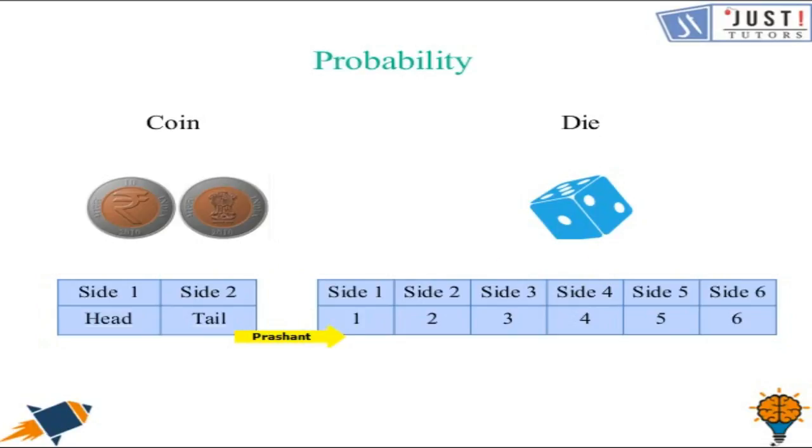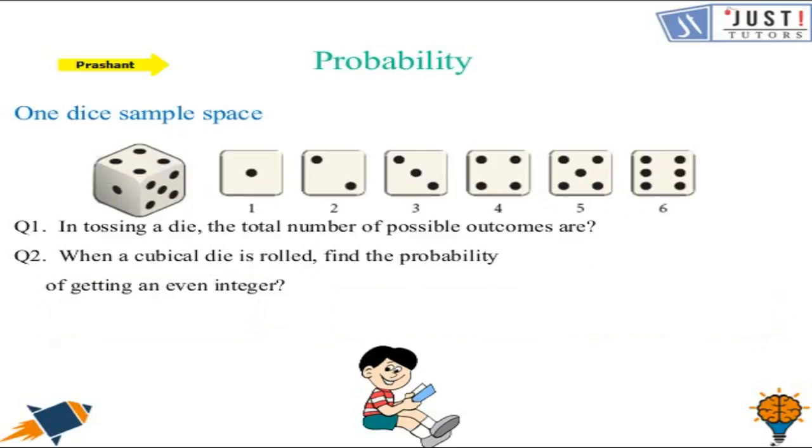So total sample space is 1, 2, 3, 4, 5 and 6. So we can see that on tossing a die, the total number of possible outcomes are 6. Because when we toss a die, then our total result is only 6. And it's related to a question.